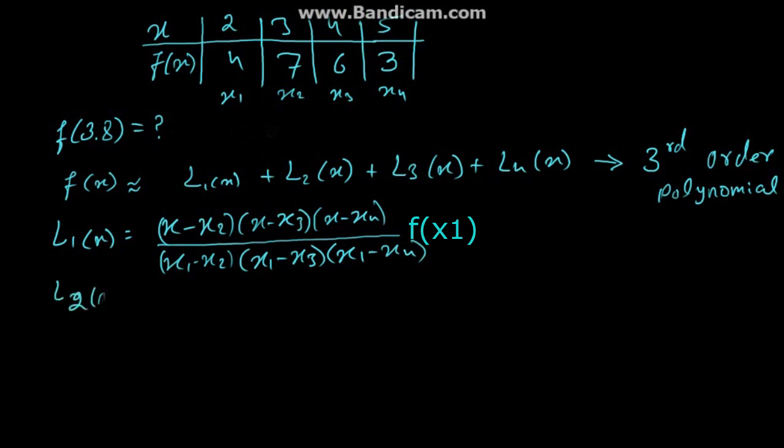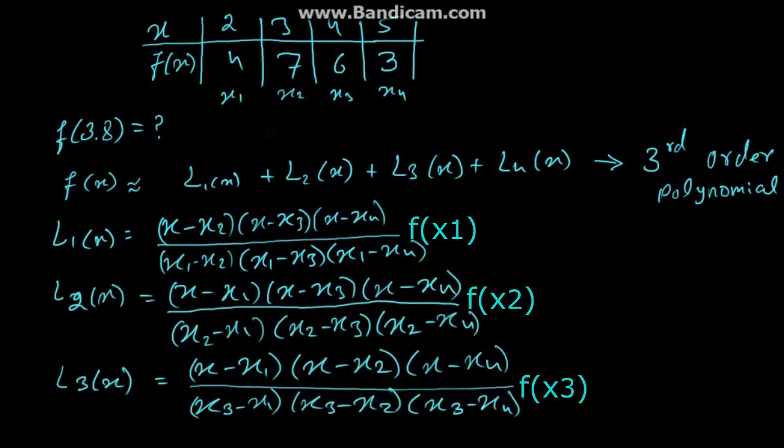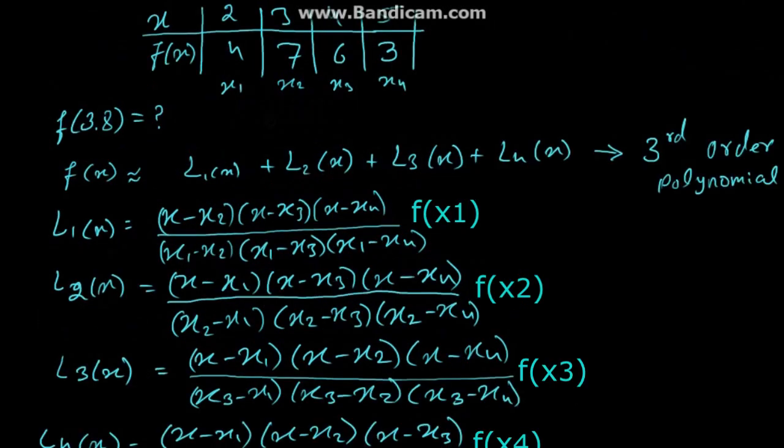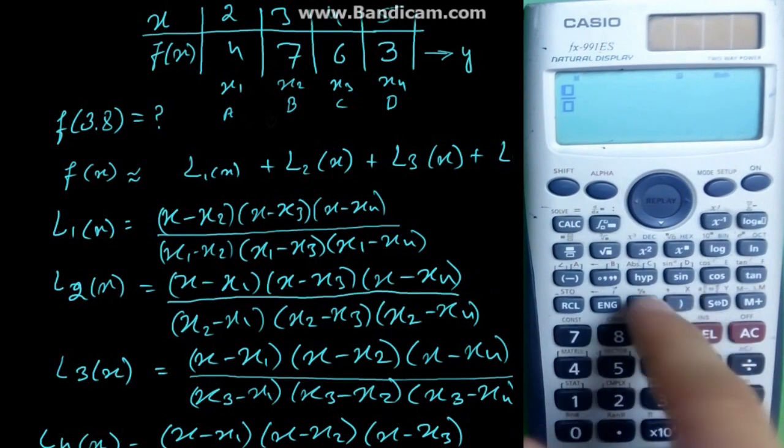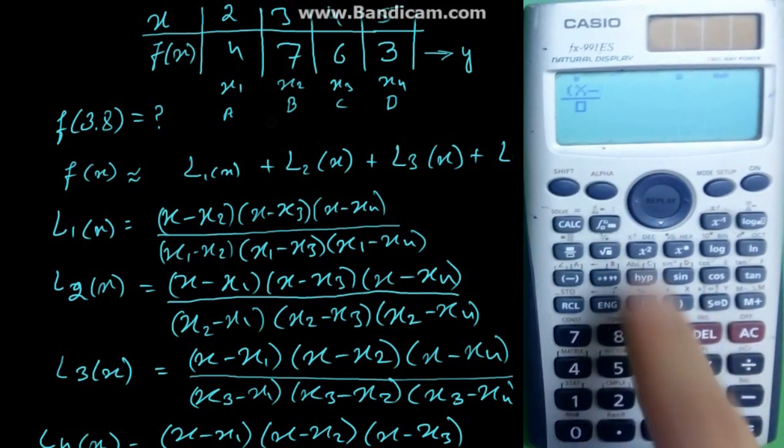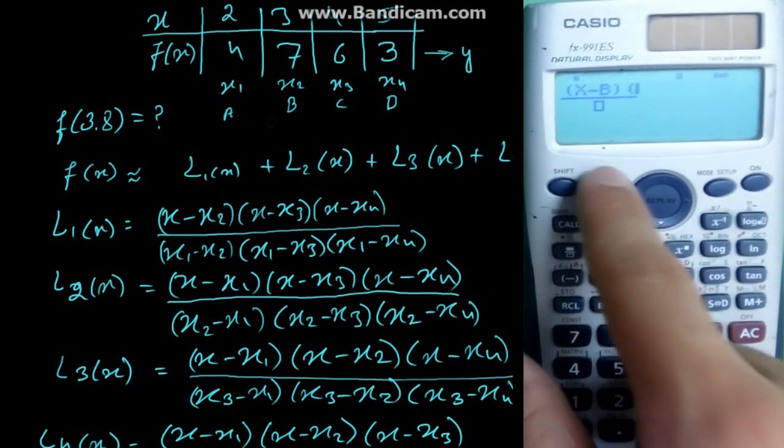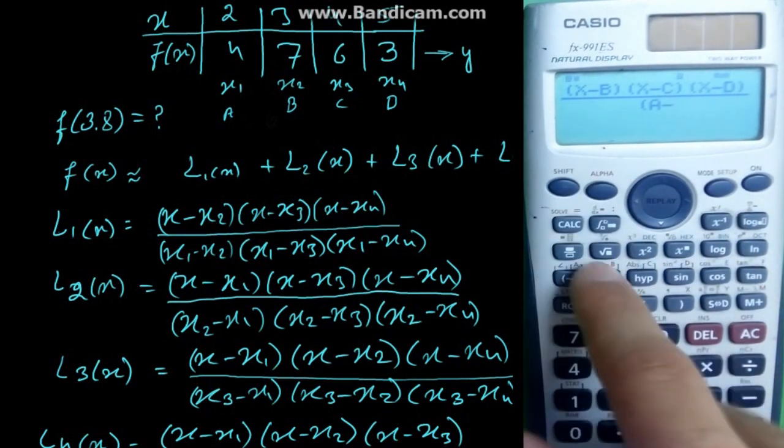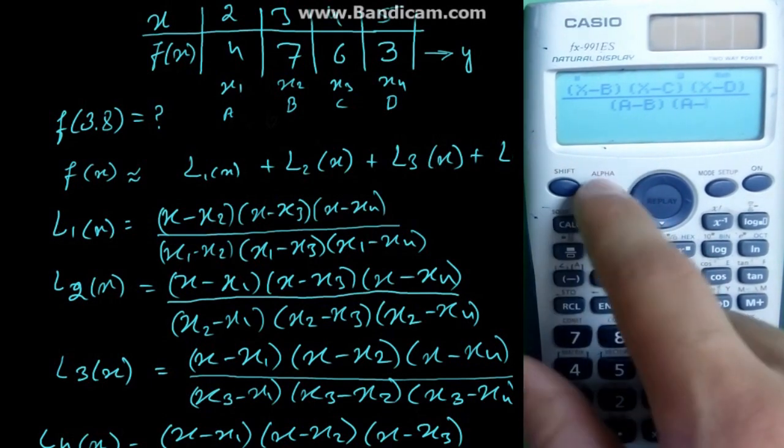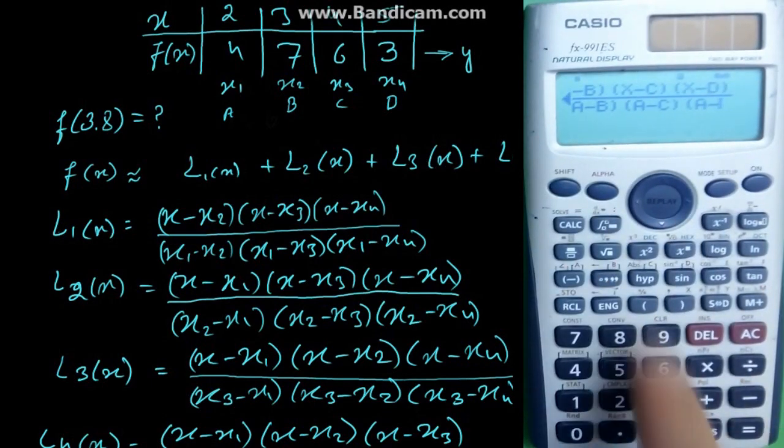Similarly for L2 of x, L3 of x and L4 of x. Now take x1 is a, x2 is b, x3 is c and x4 is d and f of x is y. Now write a general equation for L of x in the calculator which could be x minus b into x minus c into x minus d over a minus b, a minus c into a minus d into y.